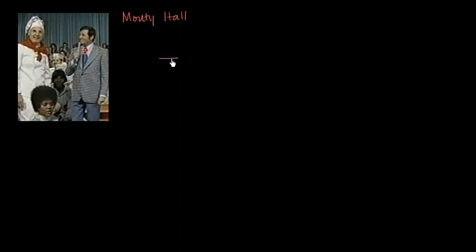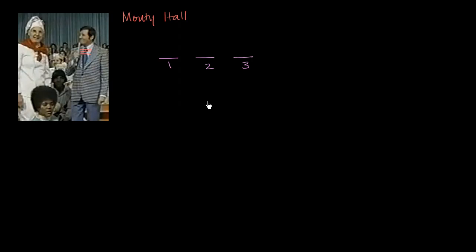On the show, you're presented with three curtains — curtain number one, curtain number two, and curtain number three. You're told that behind one of these three curtains there's a fabulous prize: a car, a vacation, or some large amount of cash. Behind the other two, there is something you do not want — a pet goat, an ostrich, or something like that.